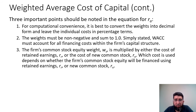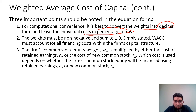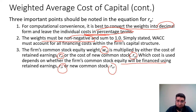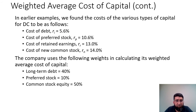Three important points when calculating WACC: first, convert weights into decimal form while leaving individual costs in percentage terms; second, weights must be non-negative and sum to one; third, the firm's common equity weight WS is multiplied by either the cost of retained earnings or the cost of new common stock, depending on whether the firm finances with retained earnings or new common stock issuance.